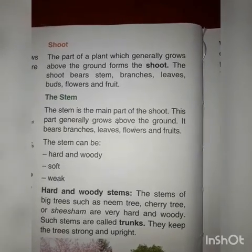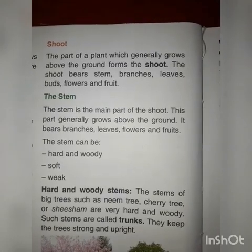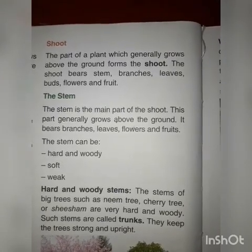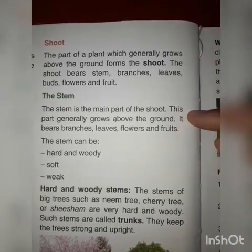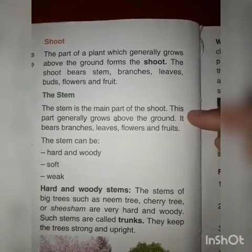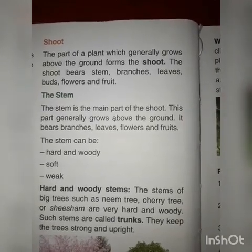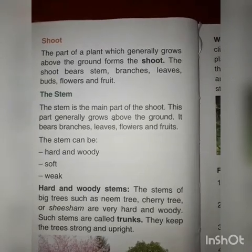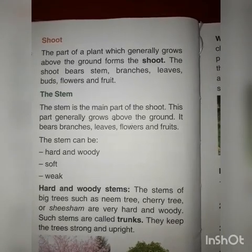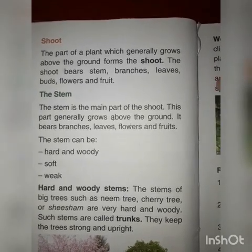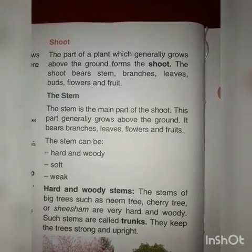The stem is the main part of the shoot. Stem क्या है? Shoot का main part है। This part generally grows above the ground. यह part जो है plants के ऊपर की ओर grow करता है। इससे branches, leaves, flowers and fruits सभी जुड़े होते हैं। The stem can be of different types।